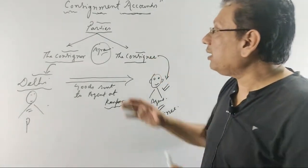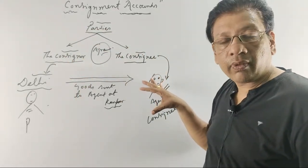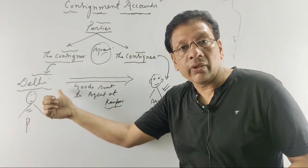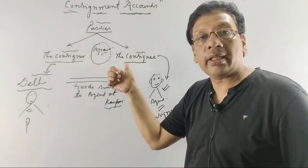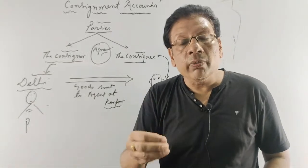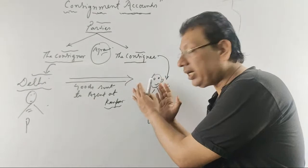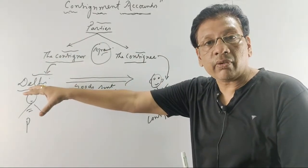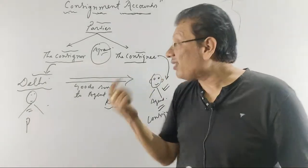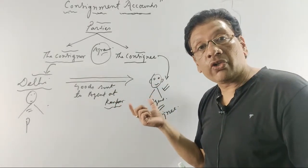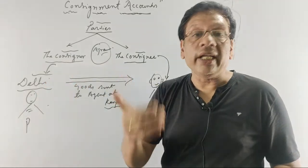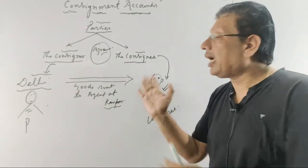There is an agreement between the consignor and the consignee. The agreement covers: what should be the selling price of the goods, what should be the rate of commission, how the amount would be reimbursed by the consignee after selling goods, how expenses will be deducted, whether bills of exchange will be drawn, and what would be the amount of advance given by the agent to the principal.